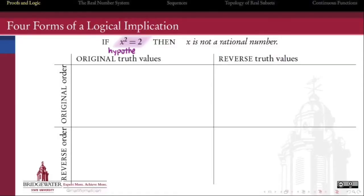Let's start with a logical implication, an if-then statement, like if x squared is equal to 2, then x is not a rational number.